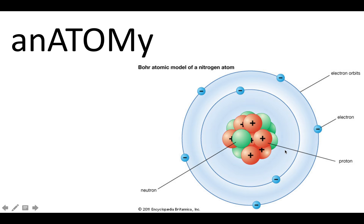Every atom has the same number of protons, neutrons, and electrons, except for a couple of rare cases called isotopes. So let's say we have an atom of gold. Gold has an atomic number on the periodic table of 79, meaning it has 79 protons, 79 neutrons, and 79 electrons.